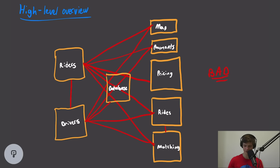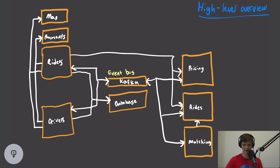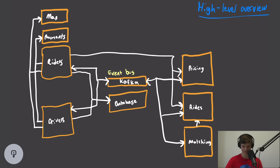In order to solve these issues, we're going to introduce an event bus. The event bus can be implemented with Kafka. Essentially what it's going to do is take information about our riders and our drivers and any real-time updates that they make, and then any service that needs access to that information can just subscribe to the event bus and get that data. This makes things a lot cleaner and much easier to maintain.